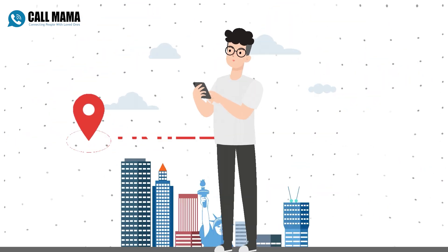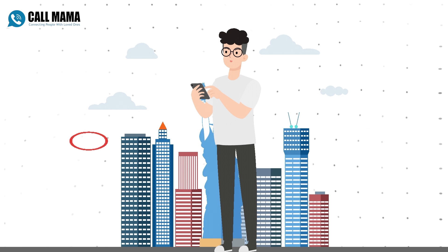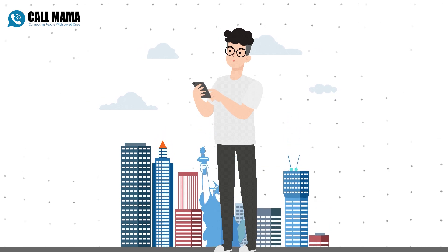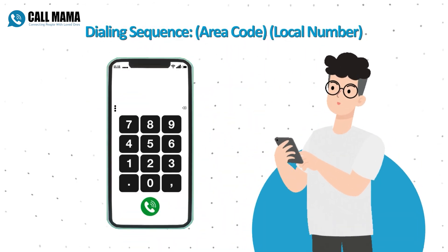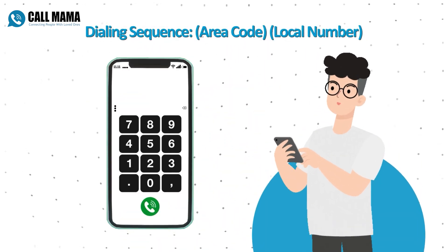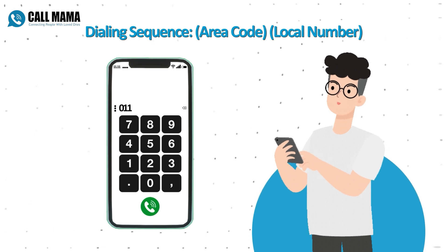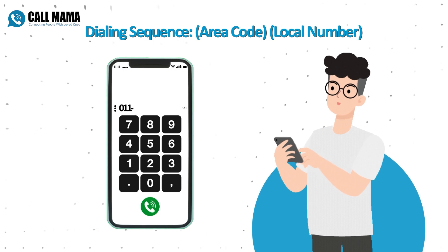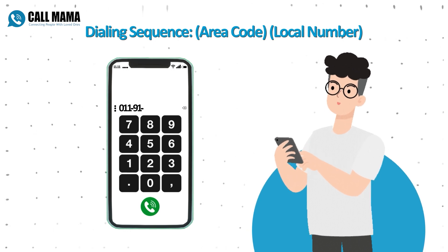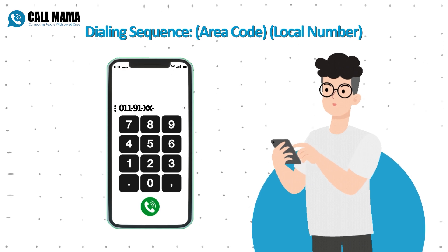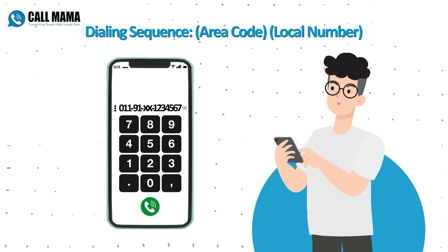First things first, dialing an Indian number from the U.S. requires a specific code sequence. You'll need to dial the U.S. exit code 011, followed by India's country code 91, then the area code of the city you're calling, and finally the local phone number.